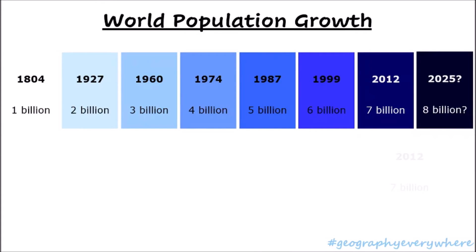Here we can see the different dates where each billion milestone was reached, and how long it took. Between 1804 and 1927, for the world to go from 1 to 2 billion, it took 123 years just to increase by 1 billion. If we look at 1927 to 1960, between 2 and 3 billion, the world grew by 1 billion people but it only took 33 years this time.